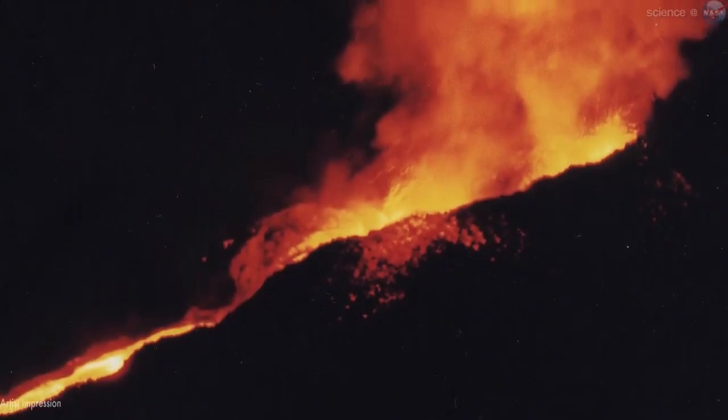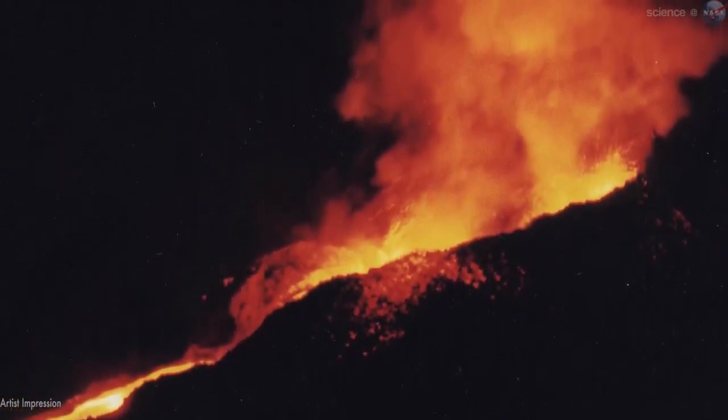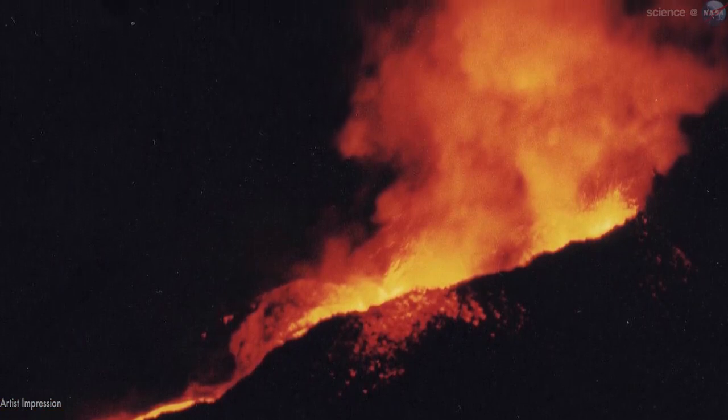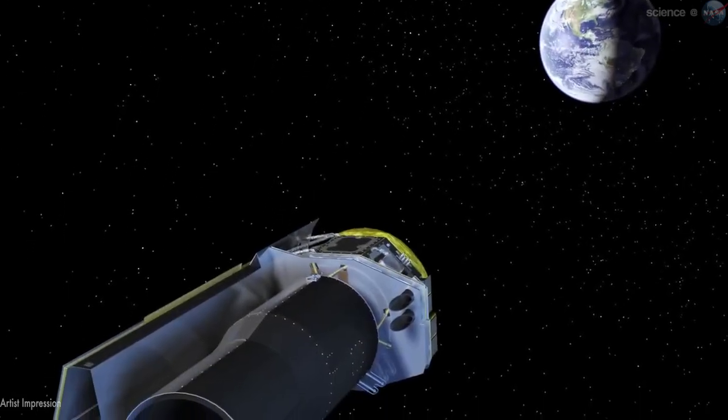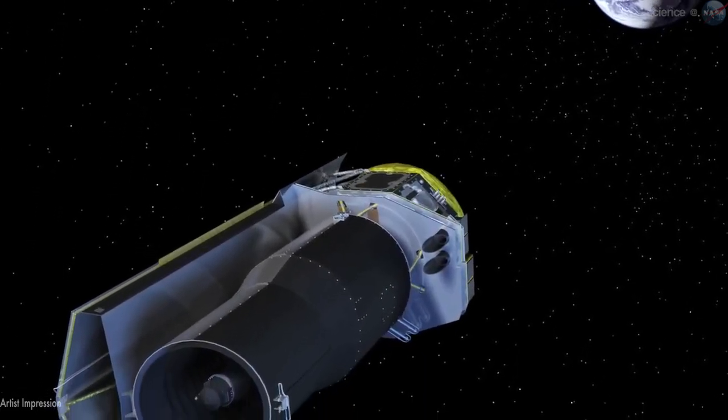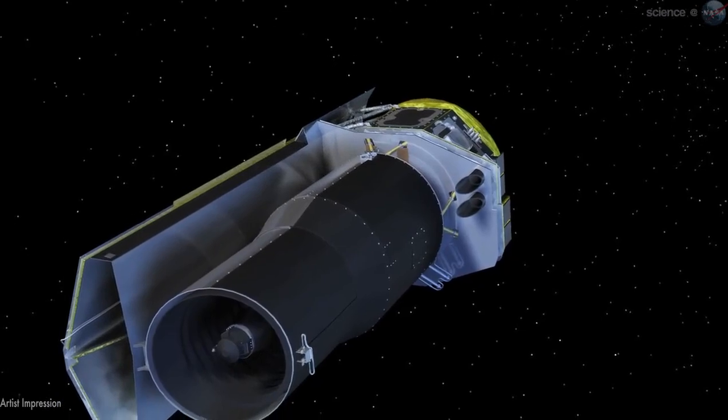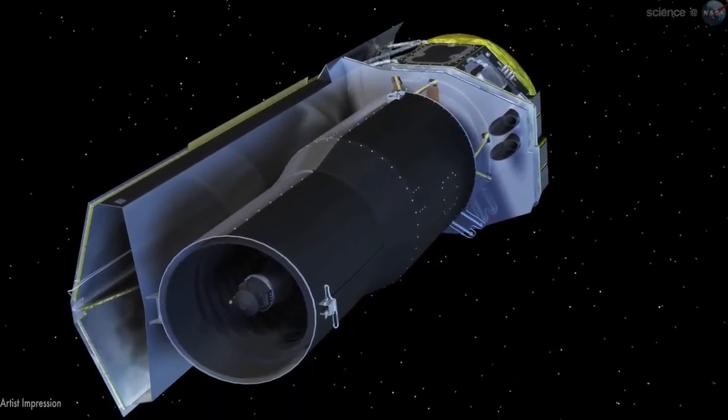Researchers have long thought that 55 Cancri e must be a wasteland of parched rock. Now they're thinking again. New observations by NASA's Spitzer Space Telescope suggest that 55 Cancri e may be wetter and weirder than anyone imagined.